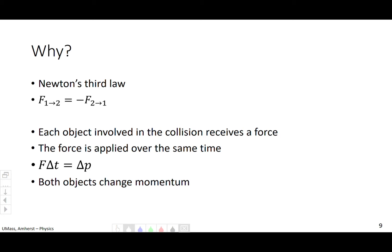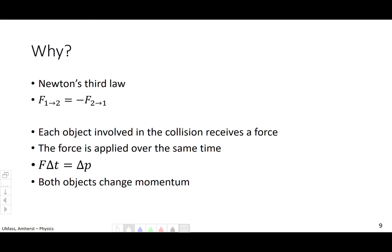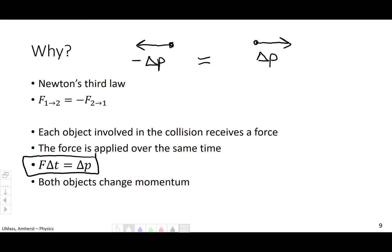Why is there conservation of momentum? Why does that even happen? Well, it's Newton's third law. The force of one on two is equal to the force of two on one. So each object in the collision receives a force. Force times time is change in momentum. If we have one object receiving a force in one direction and another object receiving a force in the other direction, one gains negative change in momentum and the other gains positive change in momentum. Therefore those cancel. Change in momentum of object one plus change in momentum of object two must equal zero — this is a conservation law and will always be true.